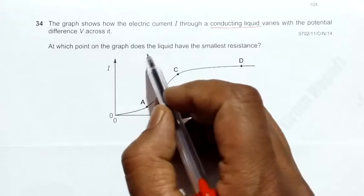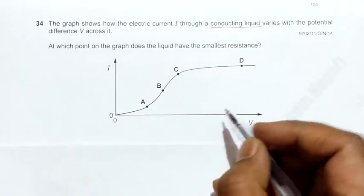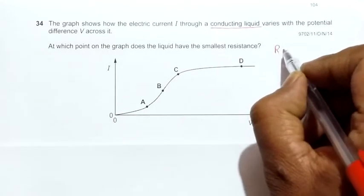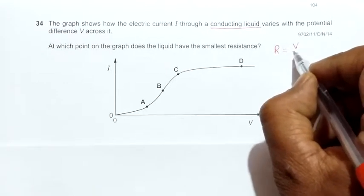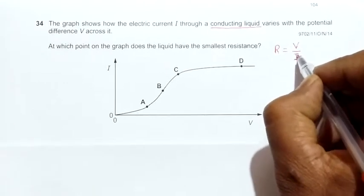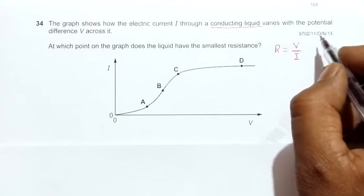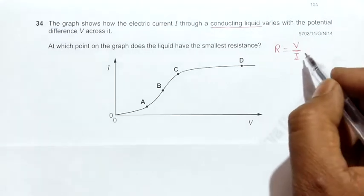The question asks at which point on the graph does the liquid have the smallest resistance. When we calculate resistance from a V-I graph, we need the ratio of V and I—not the rate, but the ratio. In all cases, we go for the ratio of V and I.